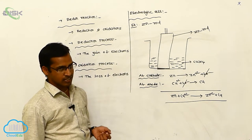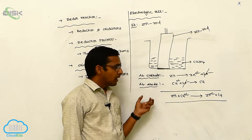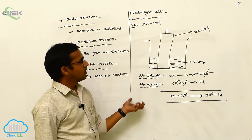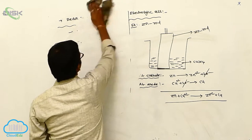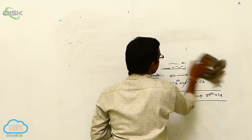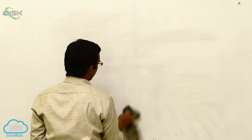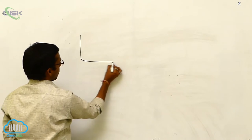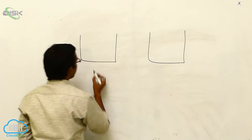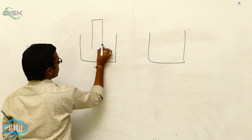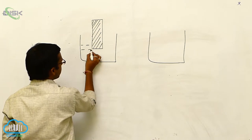Whereas in an electrochemical cell, we use two different solutions with two different electrodes, connected by a salt bridge. The best example is the galvanic cell. Consider two beakers: in the first beaker, place a zinc rod in zinc sulfate solution.